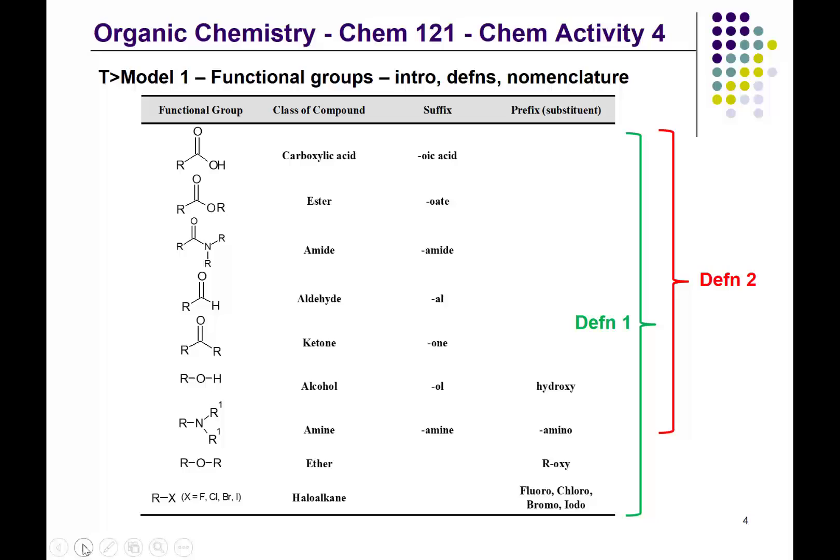I'd also like you to become familiar with what the R means in our designation of functional groups, so you can recognize various functional groups — but we can't show you all possible examples. We use the term R to represent various possibilities, but you need to know what R means, and it doesn't always mean the same thing in each of these representations. For the first four functional groups, the R on the left-hand side could either be a carbon — that is, a carbon chain or a carbon ring — or it could be a hydrogen.